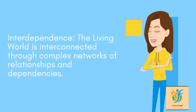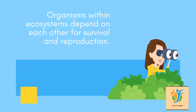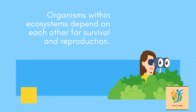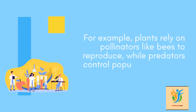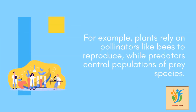Interdependence: The living world is interconnected through complex networks of relationships and dependencies. Organisms within ecosystems depend on each other for survival and reproduction. For example, plants rely on pollinators like bees to reproduce, while predators control populations of prey species.